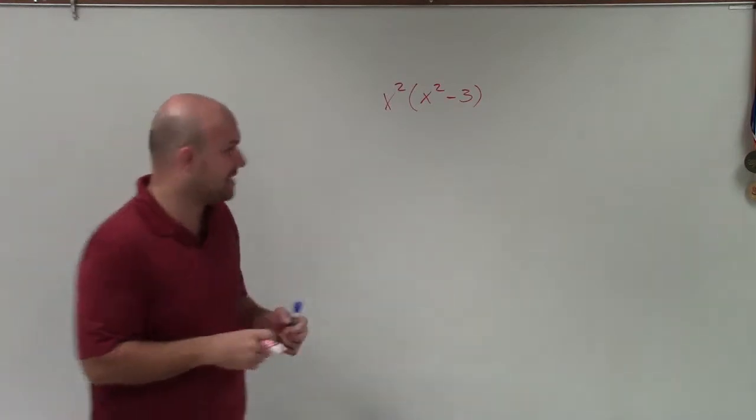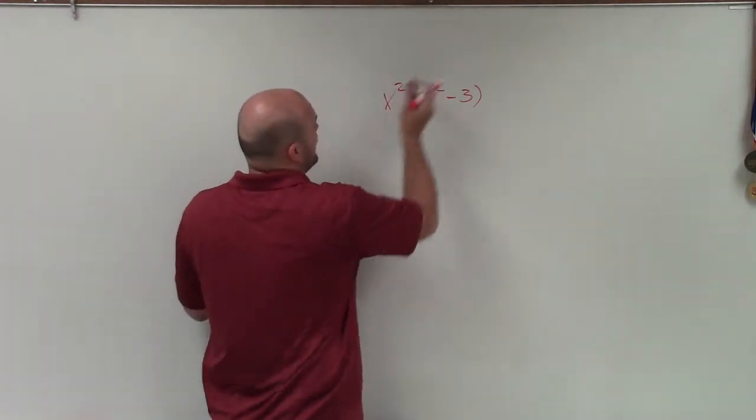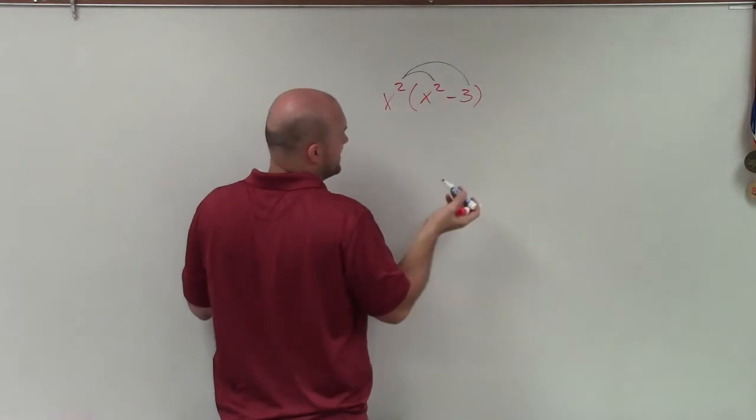To do this, we're going to apply the distributive property, which is basically saying I need to multiply x squared times x squared as well as x squared times negative 3.